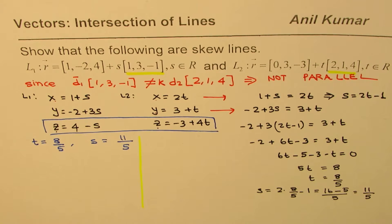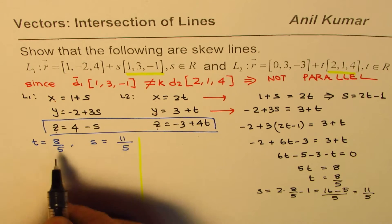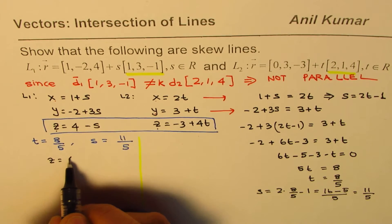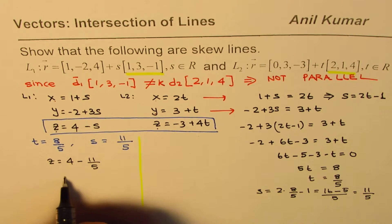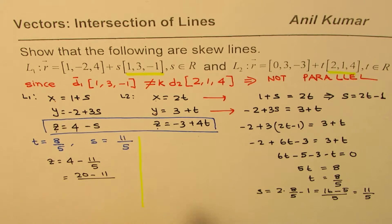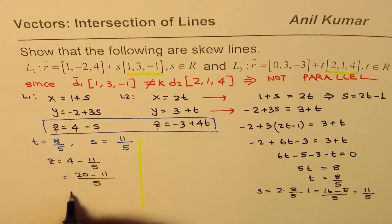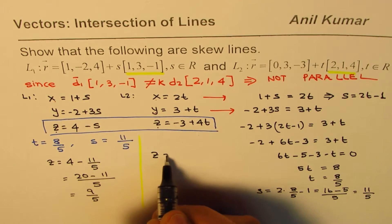We'll now substitute these values. If I write s equals 11 over 5, what do I get? I get z equals 4 minus 11 over 5 and that is 5 times 4 is 20 minus 11 over 5 and that gives us 9 over 5.